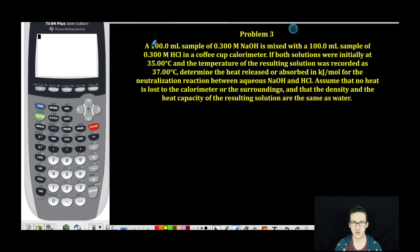So as we look at this problem, it says we have a 100 milliliter sample of 0.300 molar sodium hydroxide. It is mixed with a 100 milliliter sample of 0.300 molar HCl in a coffee cup calorimeter. If both solutions were initially at 35.0 degrees Celsius and the temperature of the resulting solution was recorded as 37.00 degrees Celsius,